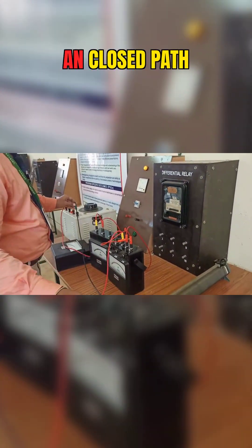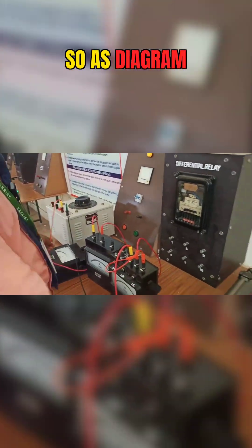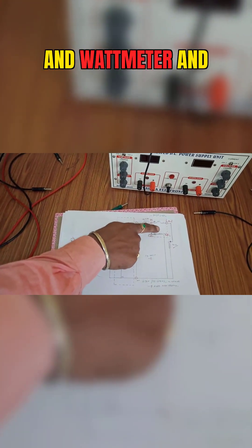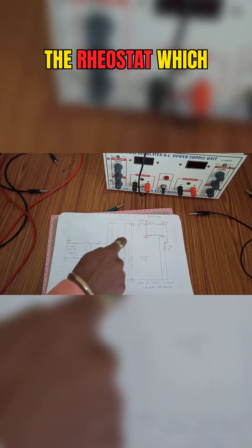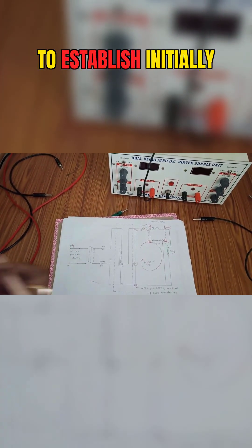As per the circuit diagram you can see here, I am connecting the voltmeter and the wattmeter and the rheostat, which forms a closed path. This is the closed path we are going to establish.